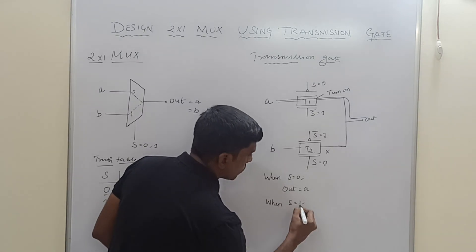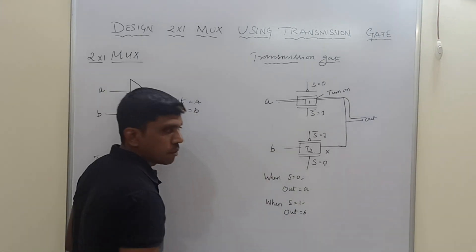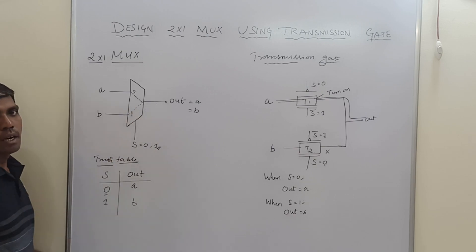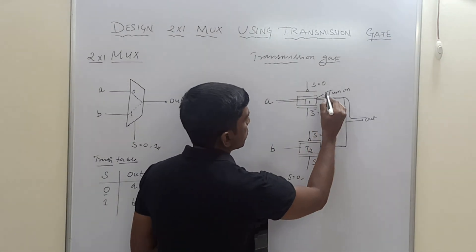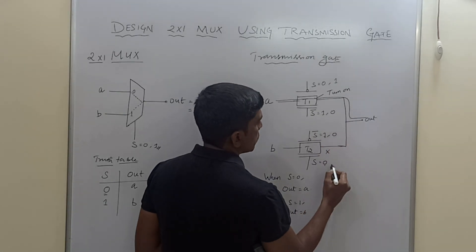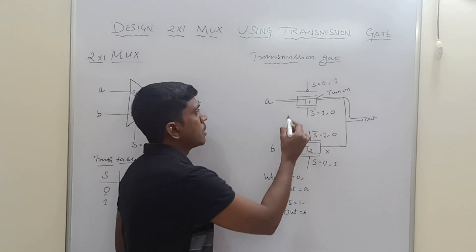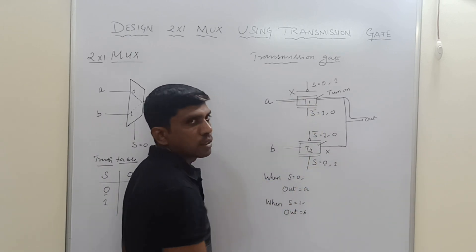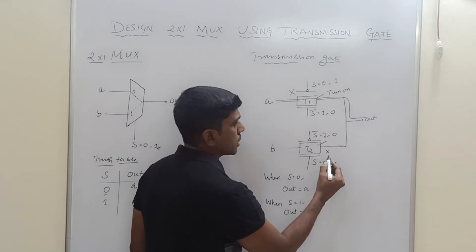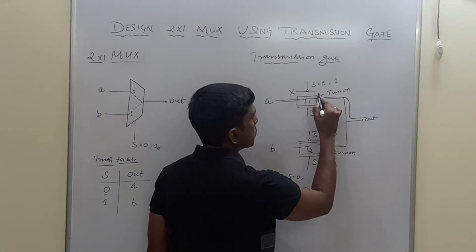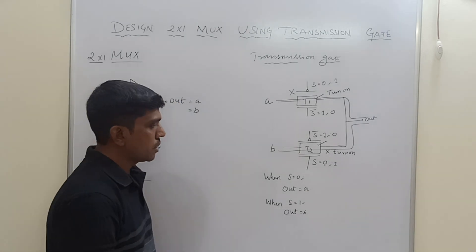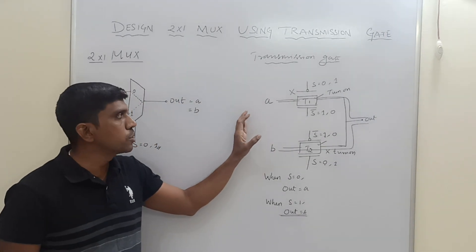For the second case, when S equals 1, S-bar equals 0. In this case T1 is turned off, because its PMOS gate receives 1 and NMOS gate receives 0. T2 is turned on, because its PMOS gate input is 0 and NMOS gate input is 1. So the B input is transferred to the output through T2 transistor, confirming output equals B. This is the complete structure to design a 2-to-1 multiplexer using transmission gates.